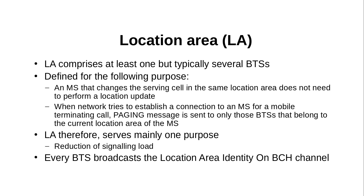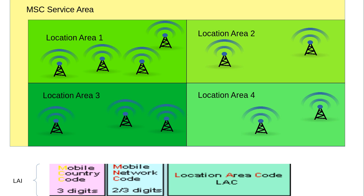This location area identifier is broadcasted by the base station on the broadcast channel — specifically the BCCH channel. On the BCCH channel of a base station, its location area identifier and location area information is broadcasted.